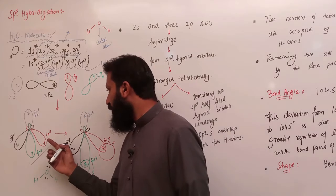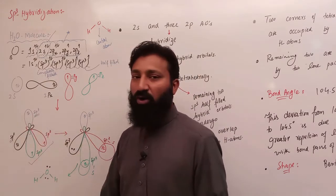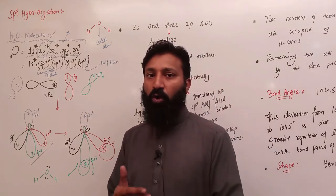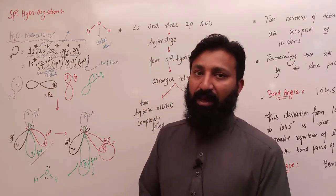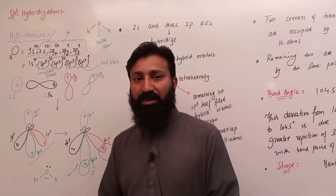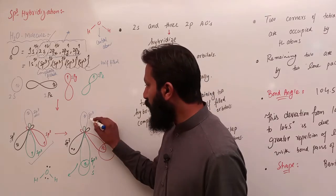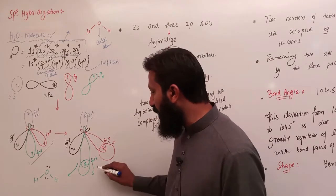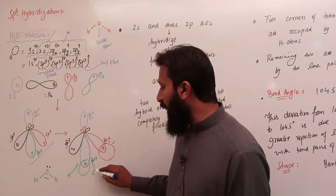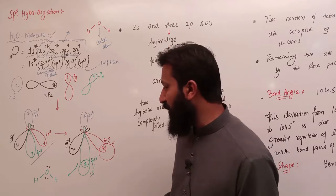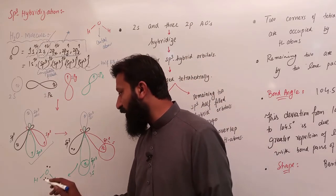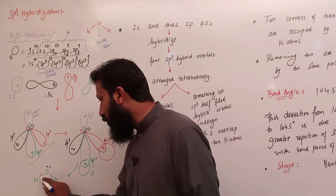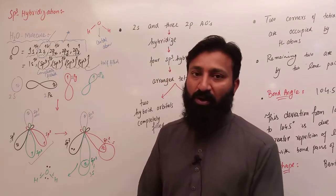अब यहाँ पर अगर हम देखें तो यह further किसी और atom के साथ overlap नहीं करेंगे, क्योंकि यह completely filled हैं। Overlapping के लिए necessary condition थी कि वह half-filled हो — उसके पास 1 electron होना चाहिए, उसके पास space होनी चाहिए। यहाँ पर SP3 hybrid orbitals जो half-filled हैं, वे hydrogen के साथ linear overlap करेंगे और oxygen-to-hydrogen 2 sigma bonds बनते हैं।